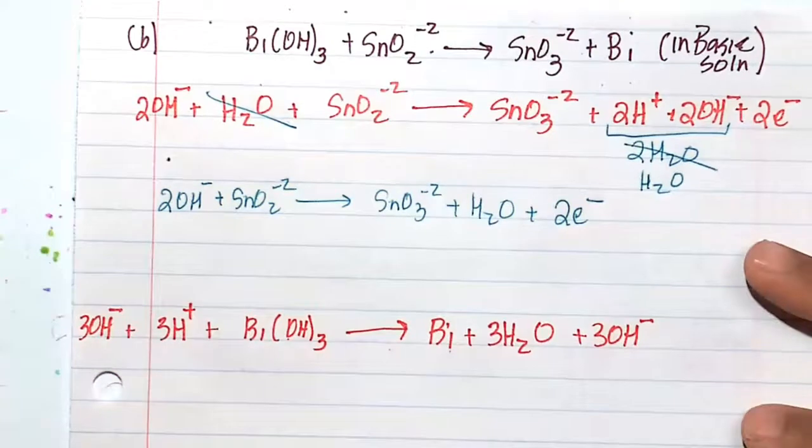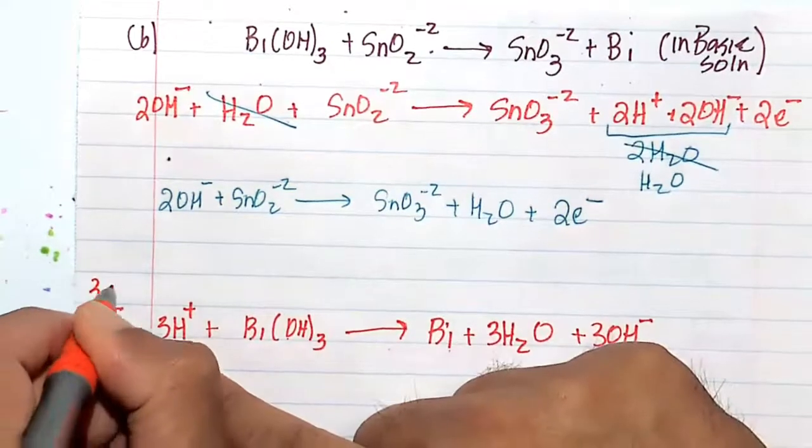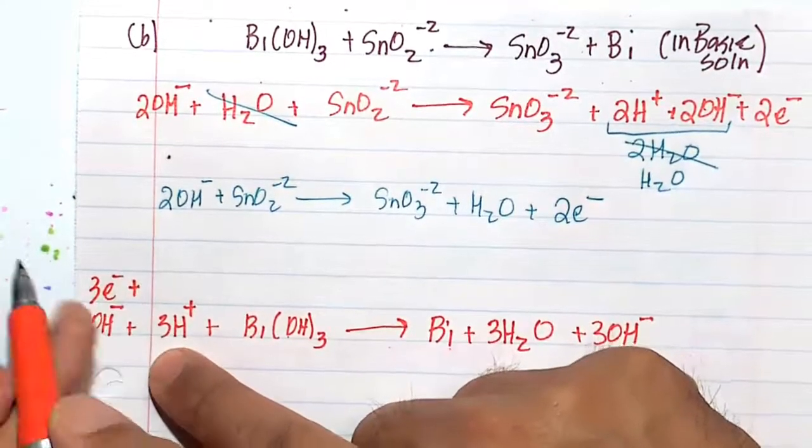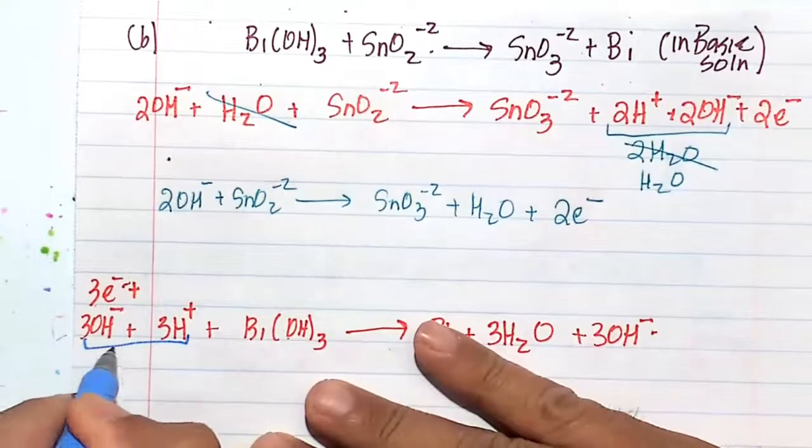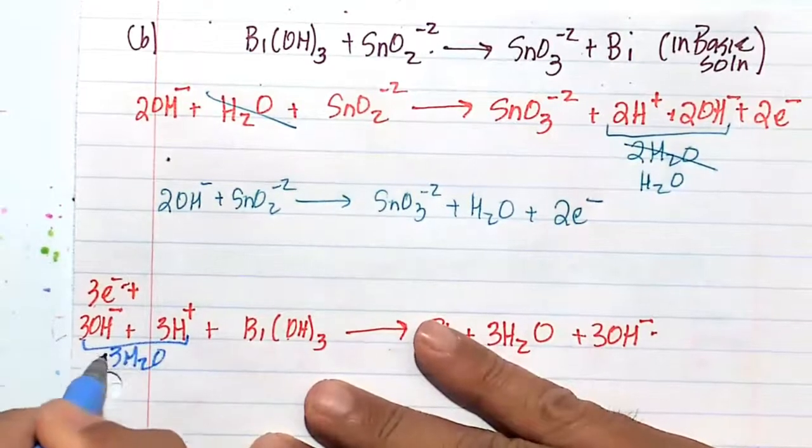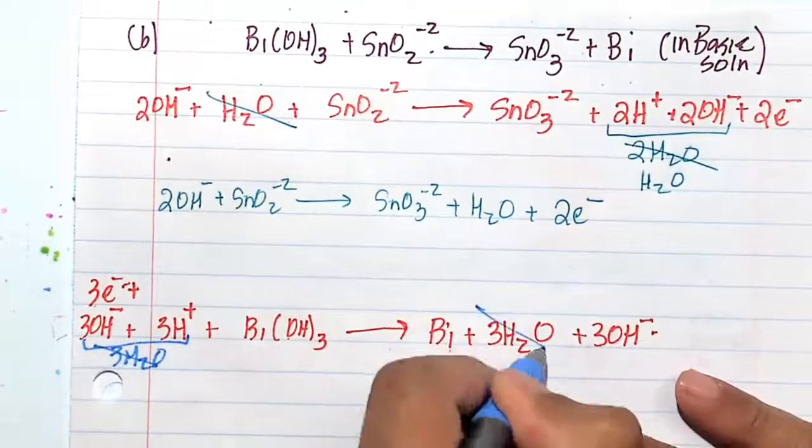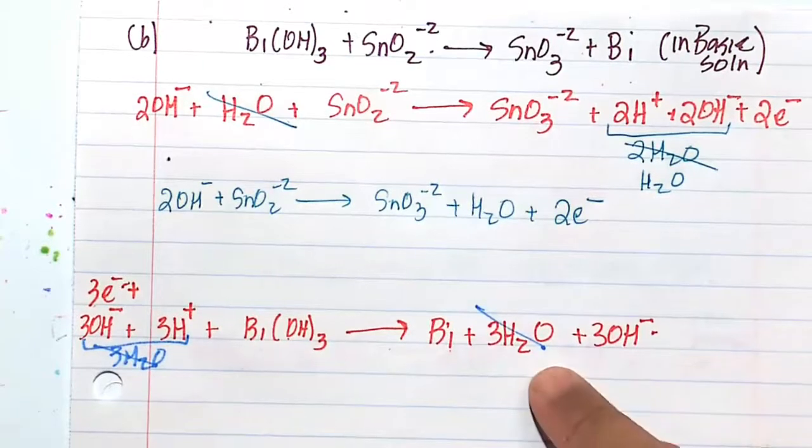Now I'll balance the charge. And balancing the charge is easy here because it's a 3E minus. Minus three, minus three. By the way, 3OH minus plus 3H plus gives us 3H2O. This 3H2O cancels out with this 3H2O on this side of the ledger.